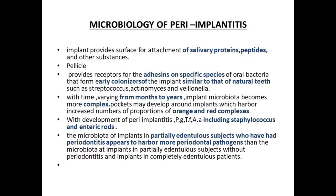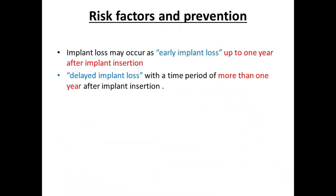The pellicle plays an important role in the initial colonization of specific oral bacteria on implant surfaces. Over months and years, the microbiota becomes complex, with Staphylococcus aureus and Enterococcus being key in the development of peri-implantitis. The microbiota differs between partially edentulous and completely edentulous patients with implants. Implant loss may be early — occurring within one year of placement — or delayed, occurring after one year.